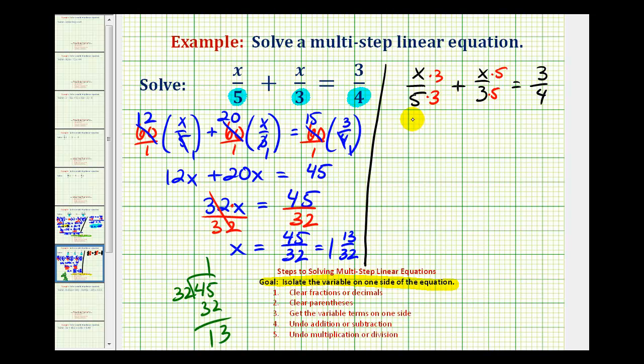So now we'd have three x over fifteen, plus five x over fifteen, equals three-fourths. And now we can go ahead and add these two fractions. We would have eight x over fifteen, equals three-fourths.